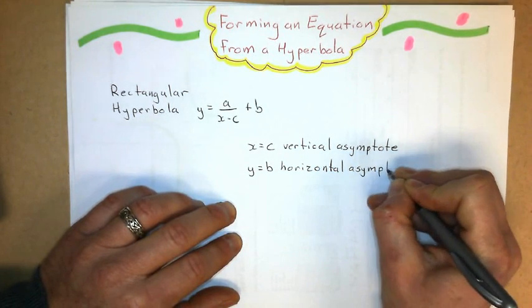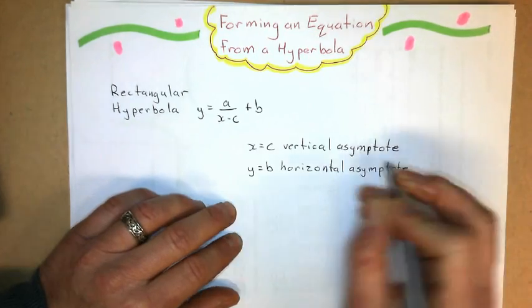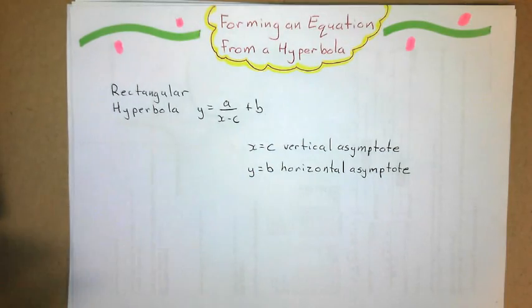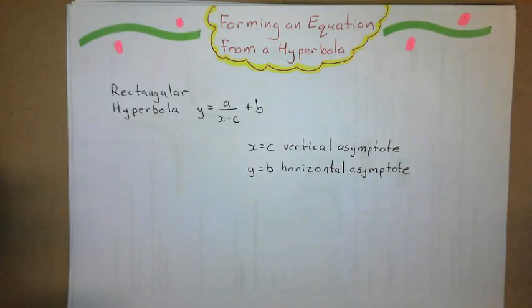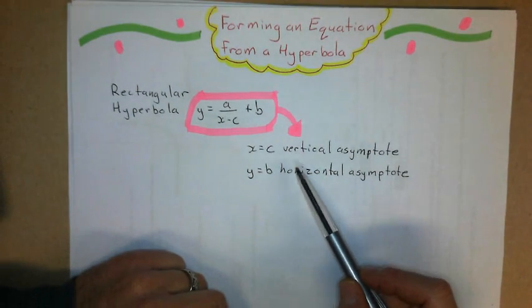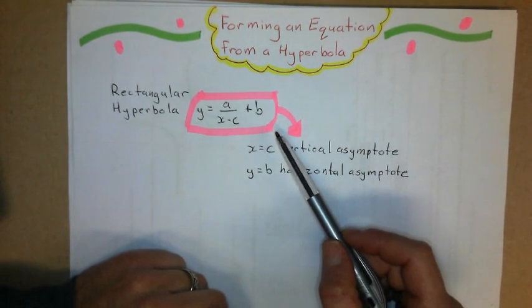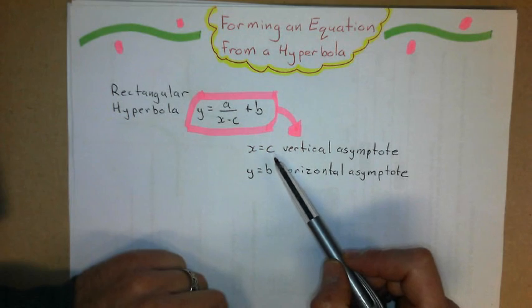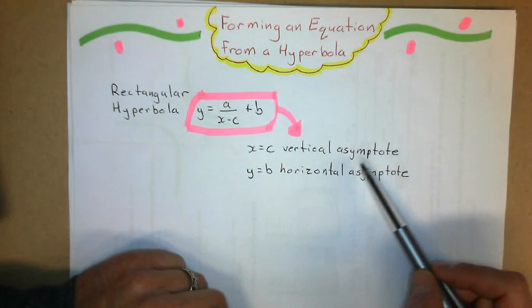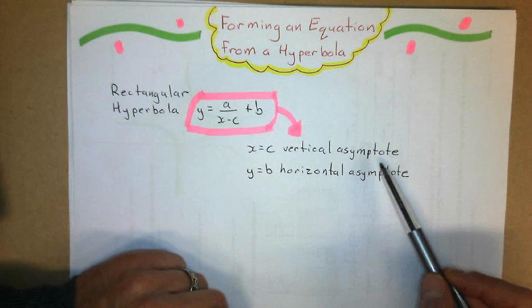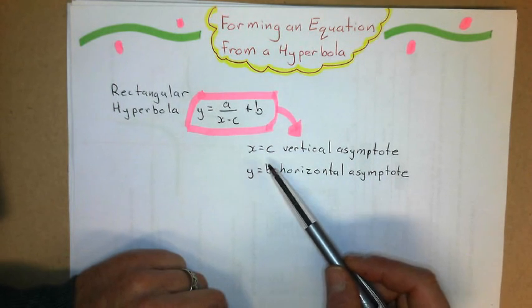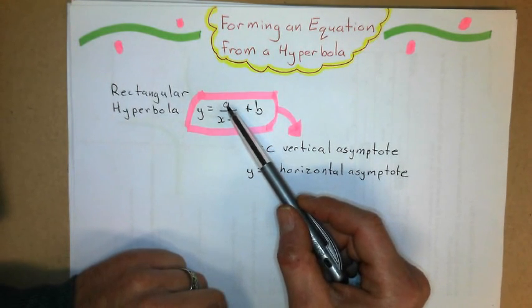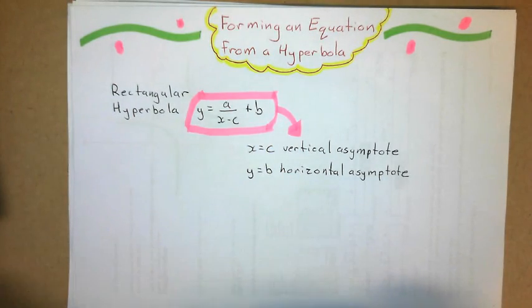So all the ones we're going to do today are going to follow this general form here. Also, in our graph, the asymptotes are going to be given, and a point on the curve is going to be given as well. And the main thing in this, like the exponential graphs we did earlier, is we're going to be solving for that coefficient up there. So let's look at our first example.